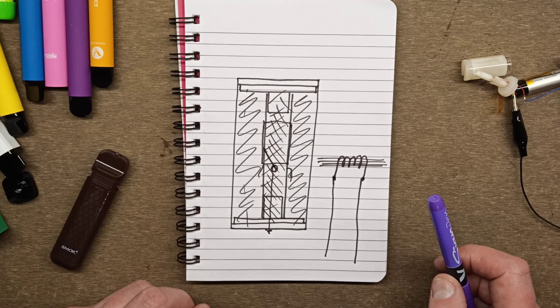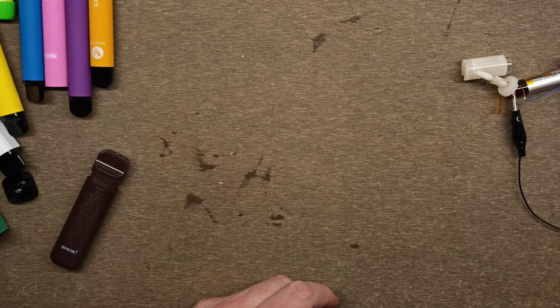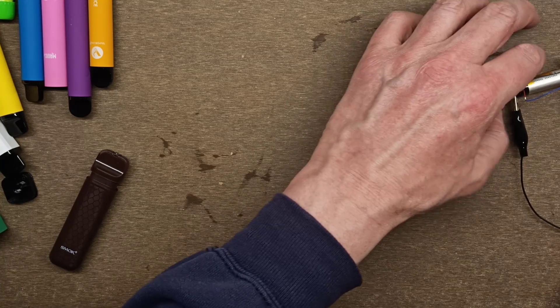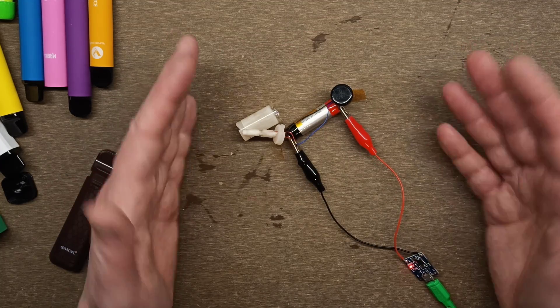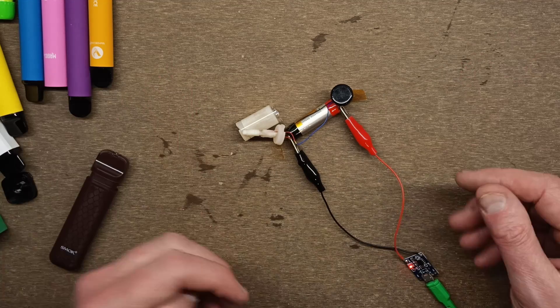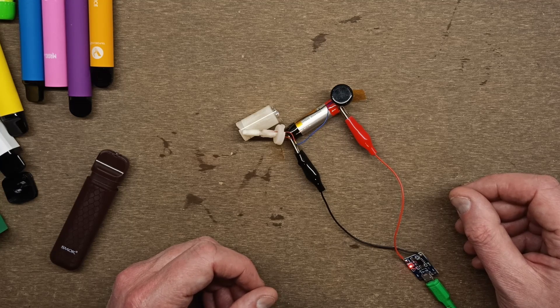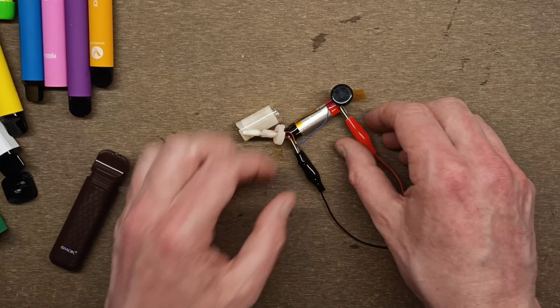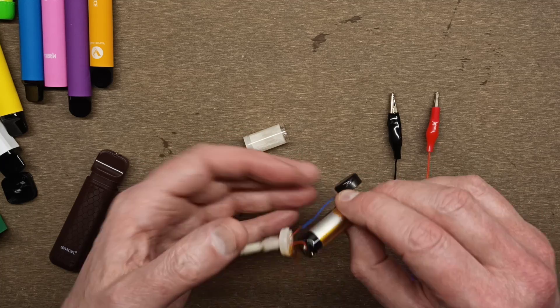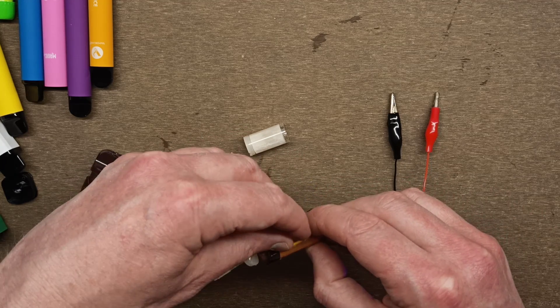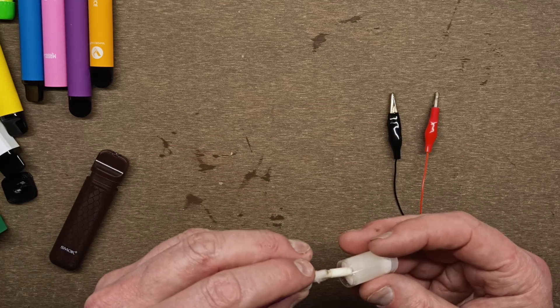Anything else worth saying about these? Just if you see them lying in the street, pick them up because I can't believe how widespread they are now. These are just everywhere. That's a handy source for these little lithium cells. They seem to be decent cells. They can put out a lot of current because they have to power a heating element in these.